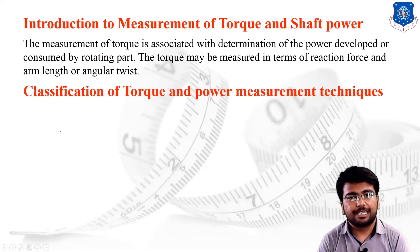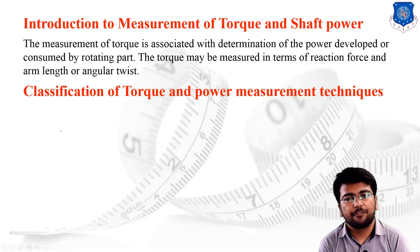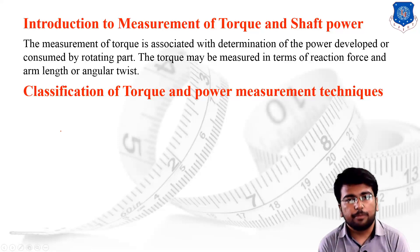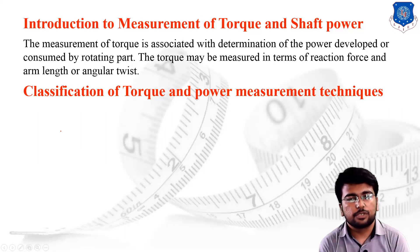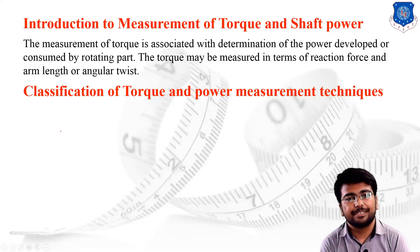We will now discuss the classification of torque and power measurement techniques. These are classified in terms of dynamometers. A dynamometer is an instrument used for the measurement of torque or shaft power. Just as a load cell is used for force measurement, a dynamometer is the equivalent instrument for torque and shaft power measurement.